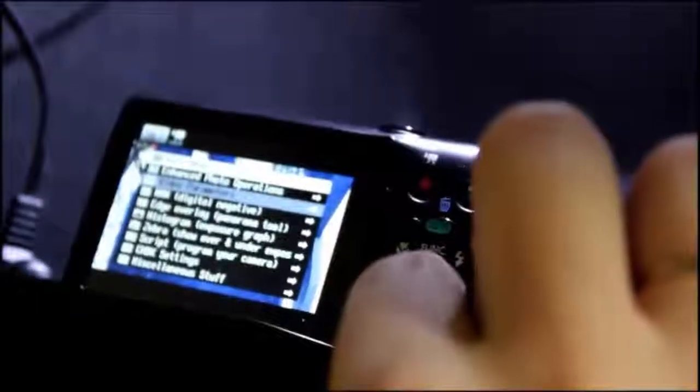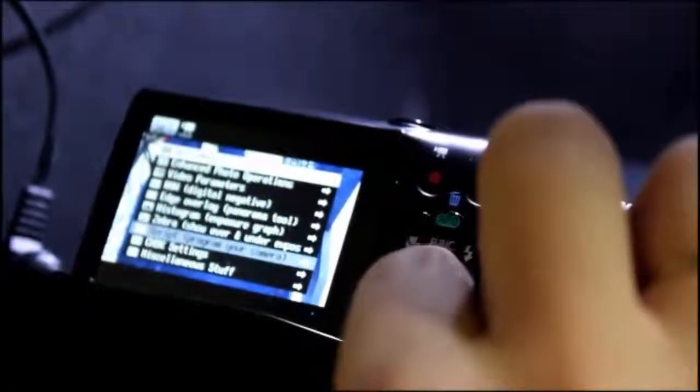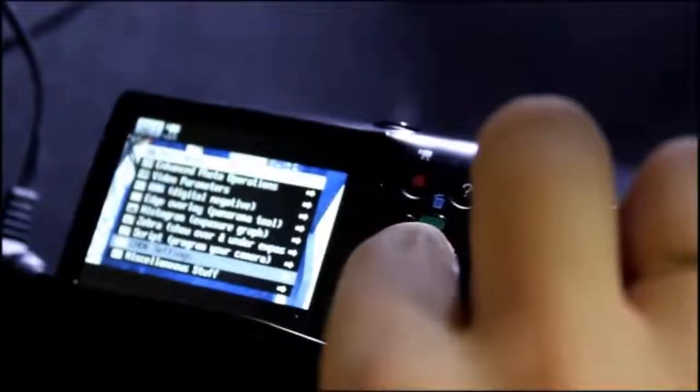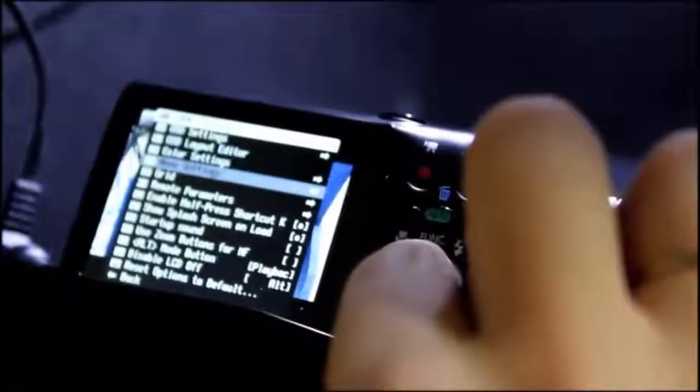Scroll down using the disk button until you highlight CHDK settings. Press the center func set button to select. Scroll down to remote parameters and select.